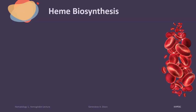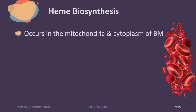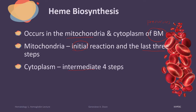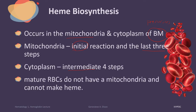Heme biosynthesis refers to how heme is created or produced, and this involves the mitochondria and the cytoplasm of the bone marrow. The cells involved here would be the erythrocyte precursors, specifically the pronormoblast up to the polychromatic erythrocytes. In the mitochondria, the initial step and the last three steps happen, while in the cytoplasm are the intermediate or middle four steps. As we mentioned earlier, mature red blood cells do not have any organelles — there is no mitochondria — removing their ability to produce heme. So mature red blood cells found in the circulation cannot make heme; only the precursors found in the bone marrow can.